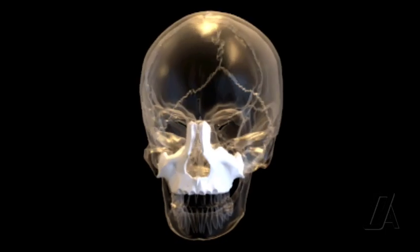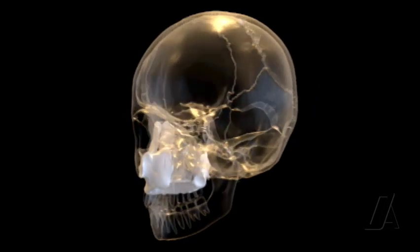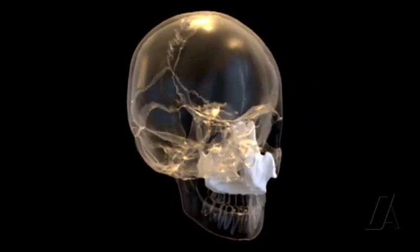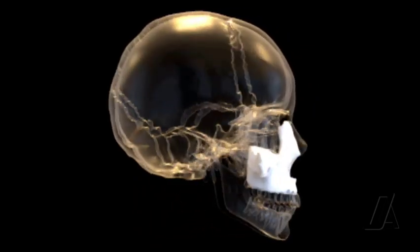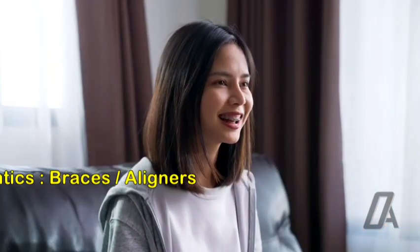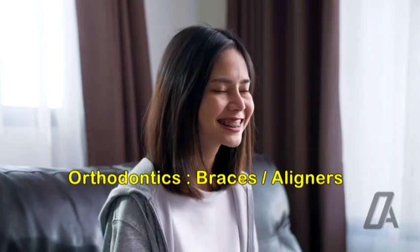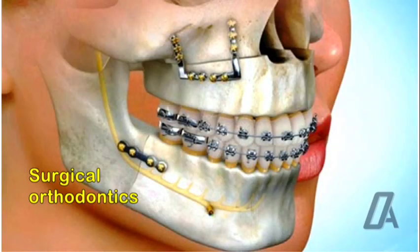The third implication is an altered facial appearance. The maxilla forms the middle third of the face. Any deviation in its growth can dramatically change a person's facial structure, often leading to asymmetry. This can have psychological implications, affecting a person's self-esteem and social interactions. Now orthodontic intervention can play a crucial role in managing these issues. Through various treatments such as braces, aligners, or in some cases surgery, orthodontists can guide the maxilla's growth, rectify malocclusions, and improve both function and appearance.